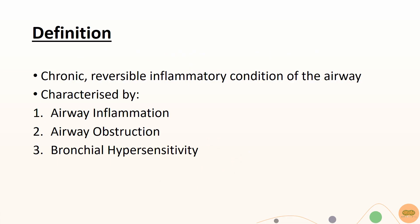Asthma is a chronic reversible inflammatory condition of the airway. It is characterized by three main features: airway inflammation, airway obstruction, and bronchial hypersensitivity.